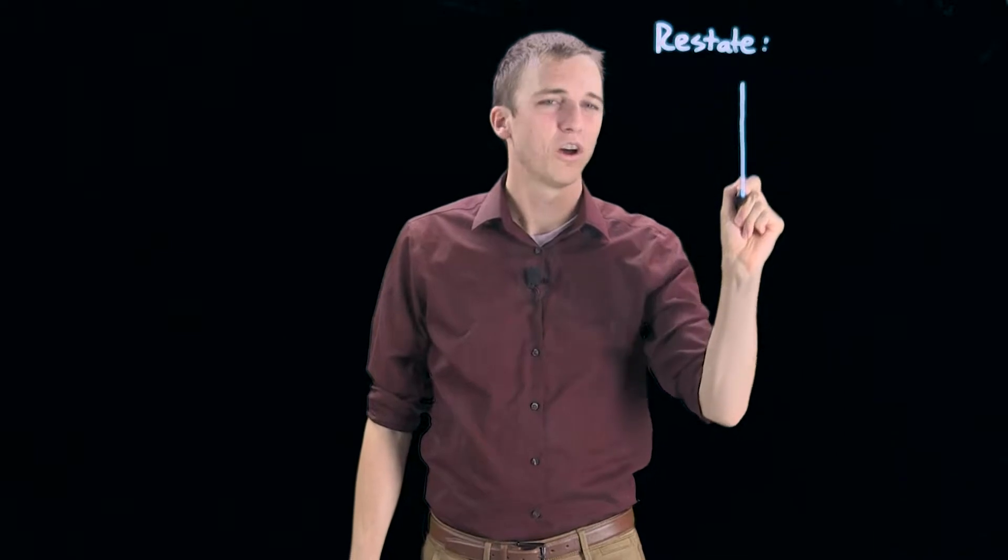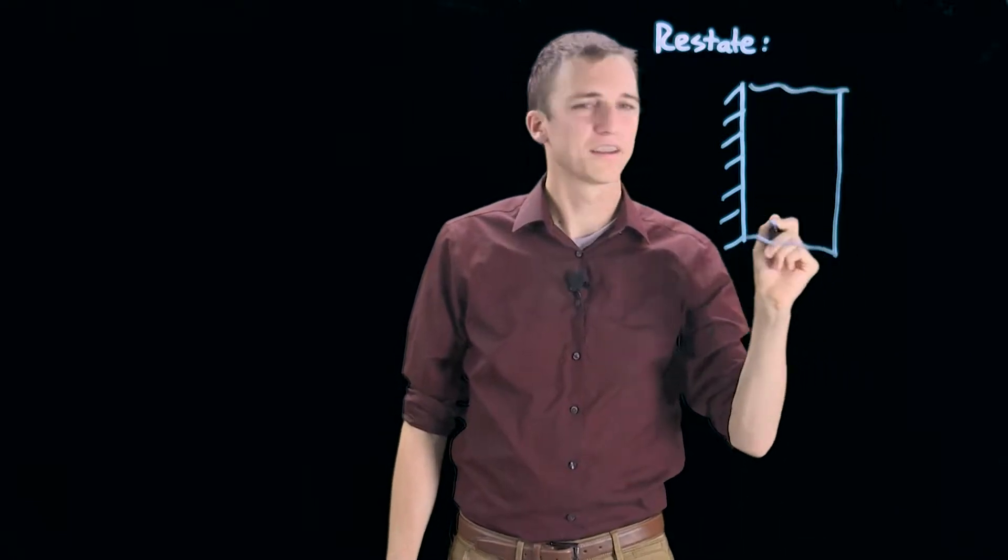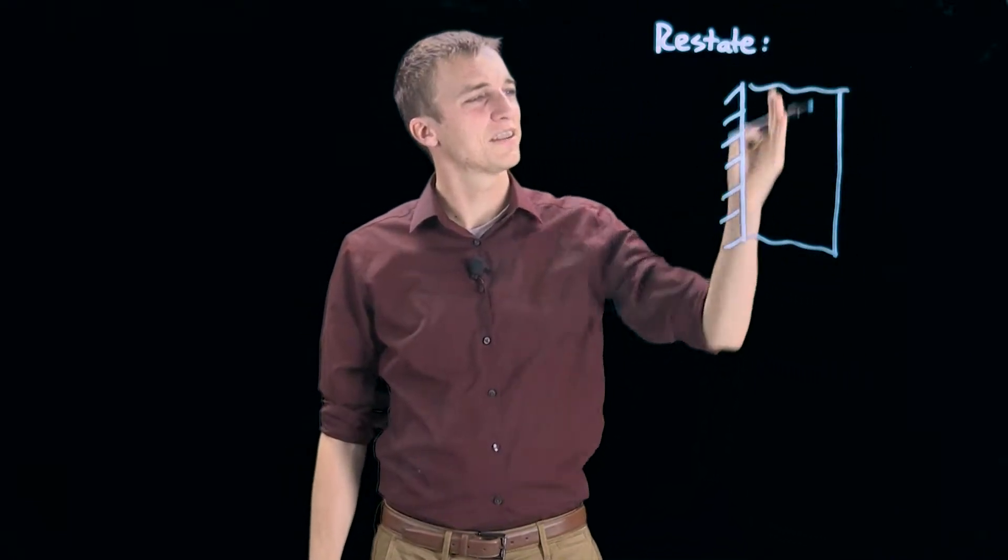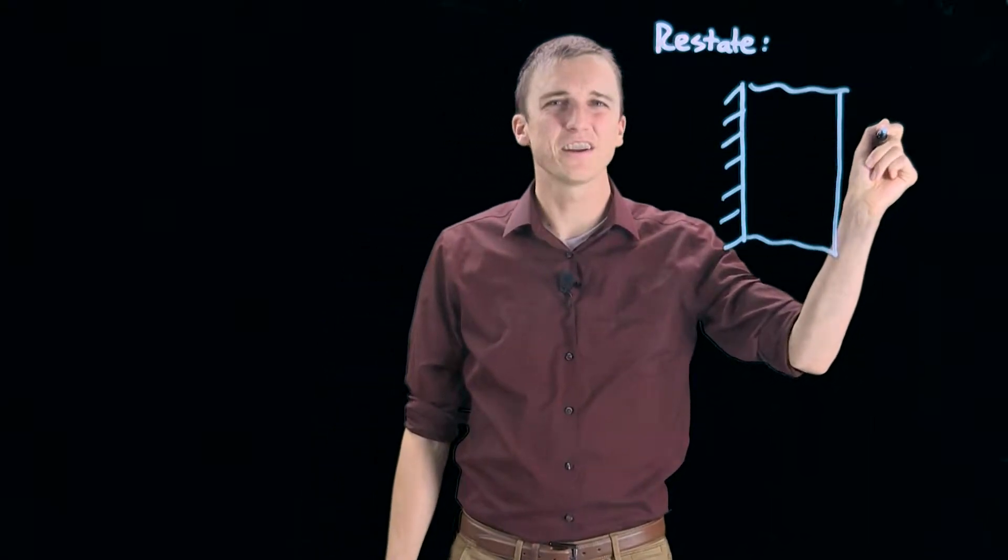We have a 1D wall that is insulated on one side. It extends infinitely up and down and in and out of the board. This side right here is exposed to convection.